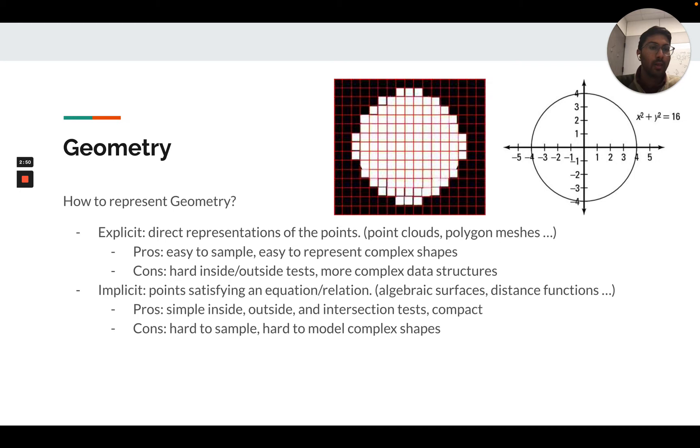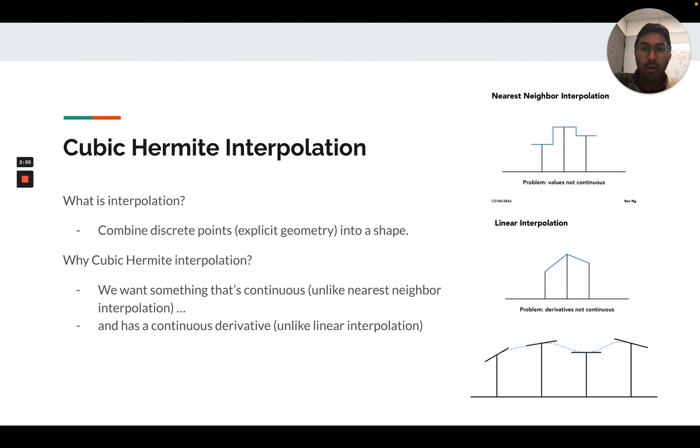We'll start with cubic Hermite interpolation, a way to represent 2D curves or 1D curves. In cubic Hermite interpolation, it's a way to smoothly connect some discrete samples. You could naively take some discrete samples shown at the top right and do nearest neighbor interpolation of these samples to get a 1D curve.